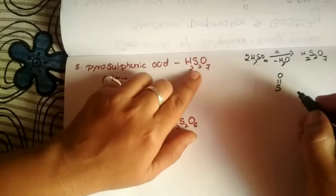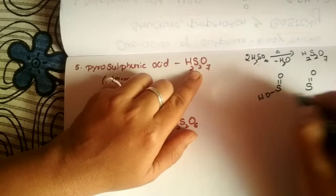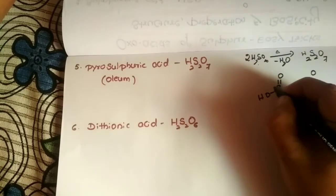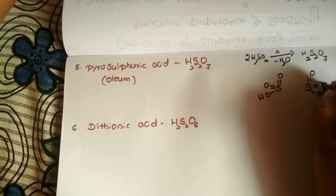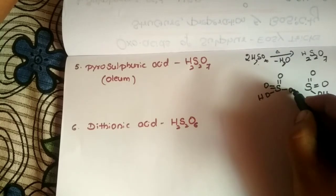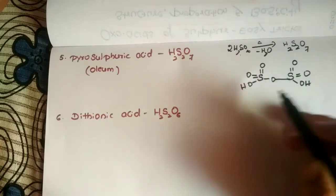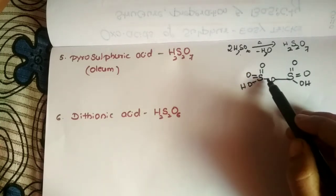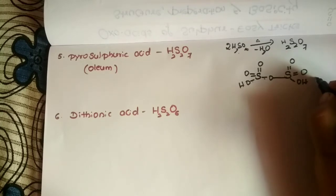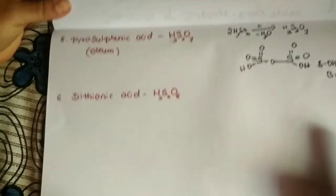For the structure of pyrosulfuric acid (H₂S₂O₇): each sulfur has one double bond O and one OH. Adding double bond O groups on each sulfur and connecting the two sulfur atoms with a bridging oxygen satisfies H₂S₂O₇ (1–2–3–4–5–6–7 oxygens). Each sulfur satisfies 6 valence electrons. There are 2 S-OH bonds, so the basicity is 2.